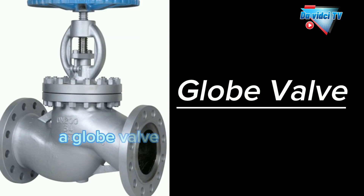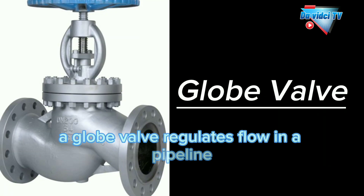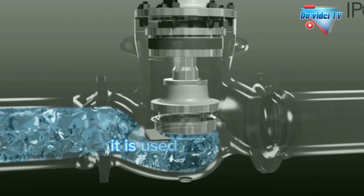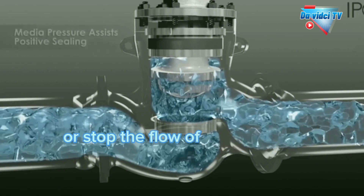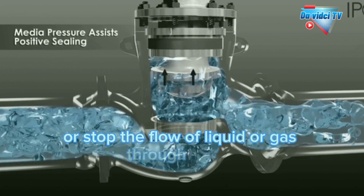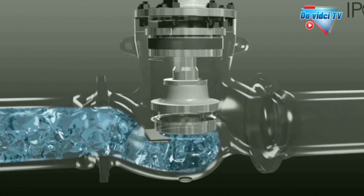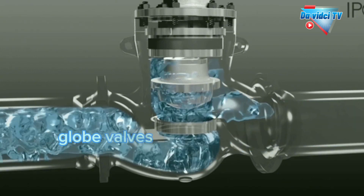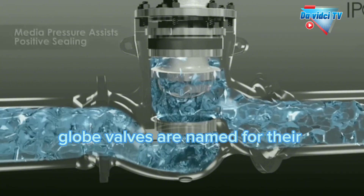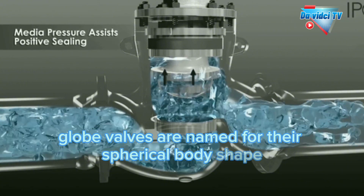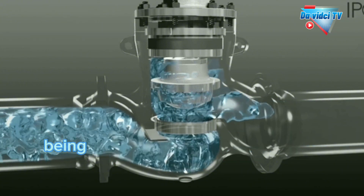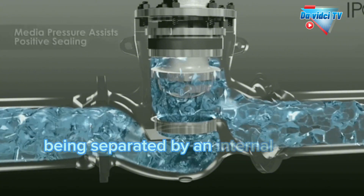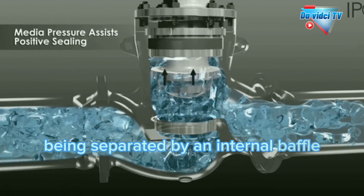A globe valve regulates flow in a pipeline. It is used to control or stop the flow of liquid or gas through a pipe. Globe valves are named for their spherical body shape, with the two halves of the body being separated by an internal baffle.